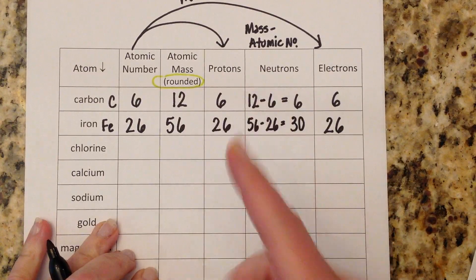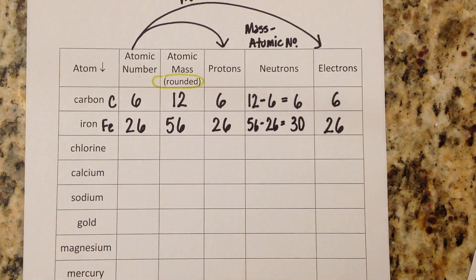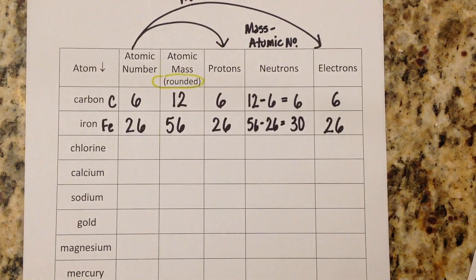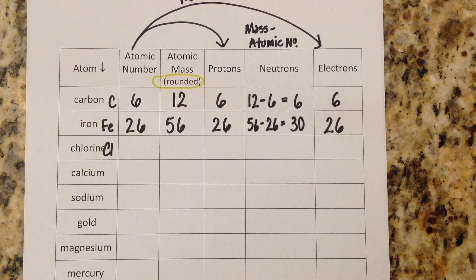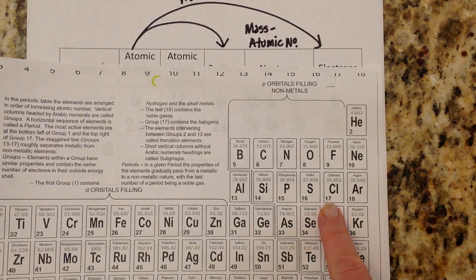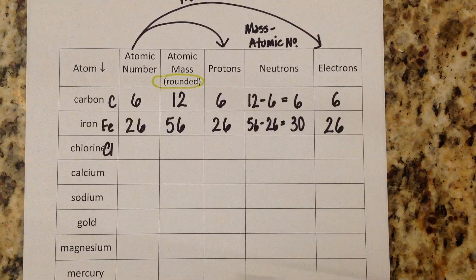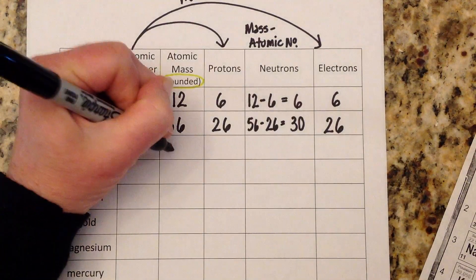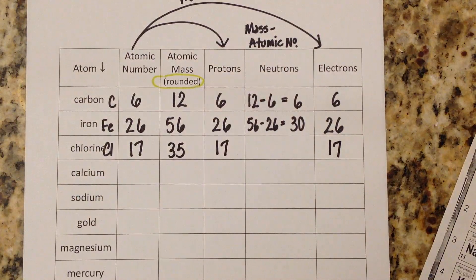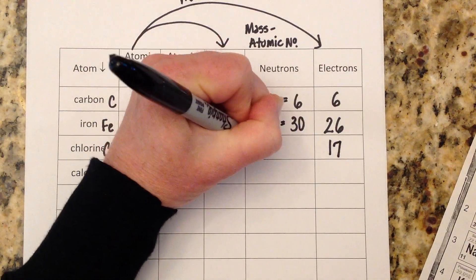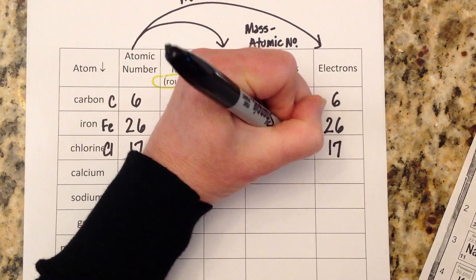It never fails — a student will run up and say they can't remember if it's atomic number minus atomic mass or atomic mass minus atomic number. And I usually say just take a breath and think about what you said: it's going to have to be the big number minus the little number. So if you ever get confused, just remember that for your number of neutrons. Chlorine is Cl — atomic number of 17, mass of 35.45. The atomic number is 17, mass rounds to 35. That gives us 17 protons, 17 electrons, and 35 minus 17 equals 18 neutrons.